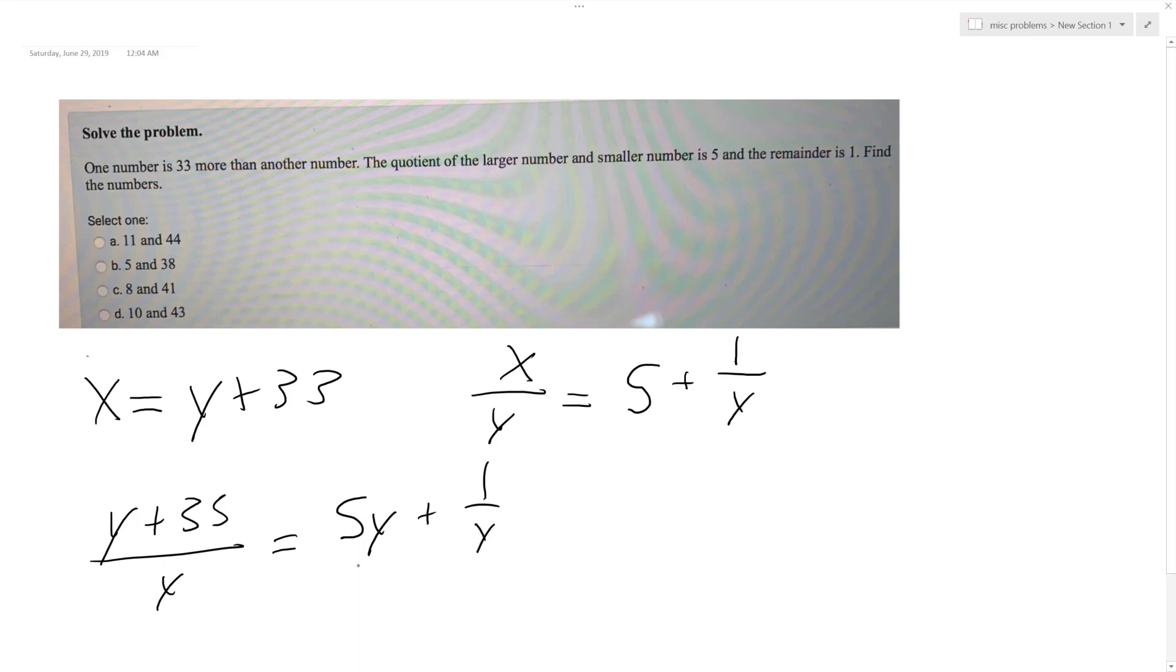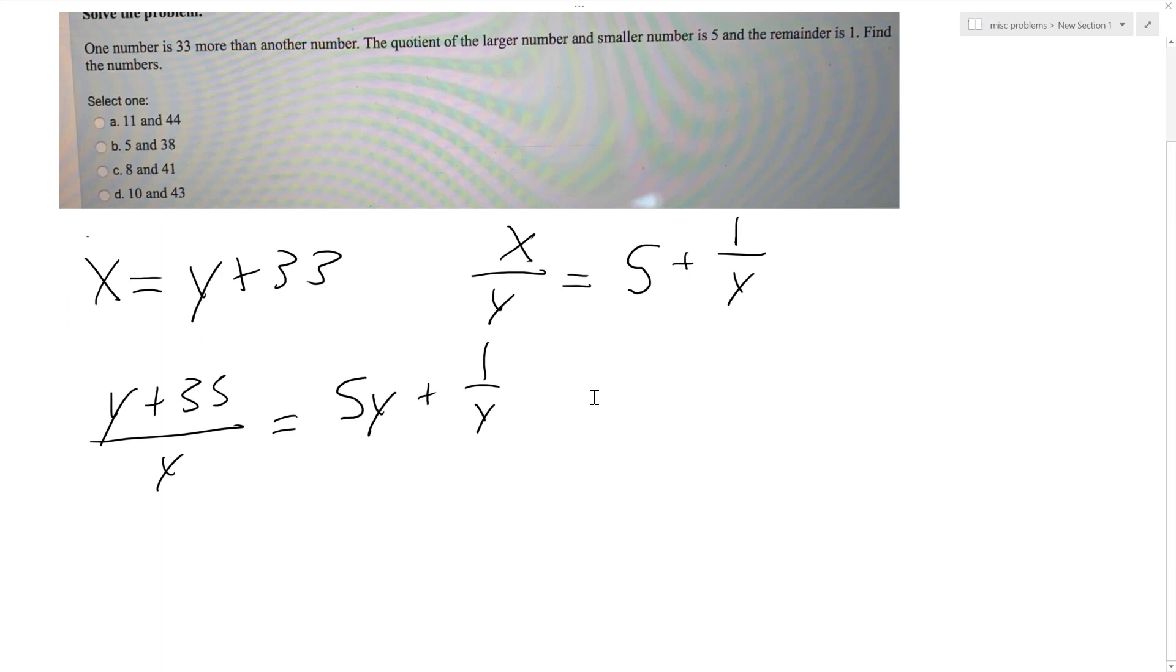So if we multiply everything by y, what happens is we get y plus 35 is equal to 5y squared plus 1.